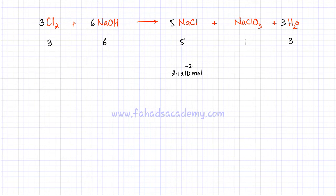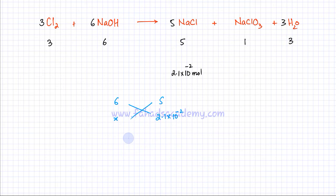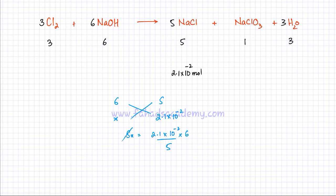I know that six NaOH produces five NaCl. So if I have 2.1 × 10⁻² moles of NaCl, the required NaOH is x. Cross-multiplying: 5x = 2.1 × 10⁻² × 6. Dividing by 5: 2.1 × 10⁻² × 6 ÷ 5 = 0.0252 moles of NaOH.